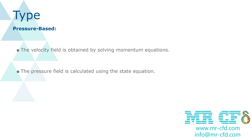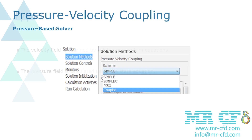When using the pressure-based solver, the velocity field is obtained by solving momentum equations, and the pressure field is calculated using the state equation. The pressure field is also determined by solving the pressure correction equation extracted by manipulating the continuity and momentum equations. Using Navier-Stokes equations, we can obtain the velocity parameter using an initialized pressure parameter, but this velocity cannot automatically satisfy the continuity equation, because we have only one initialized pressure and it cannot be guaranteed to satisfy continuity.